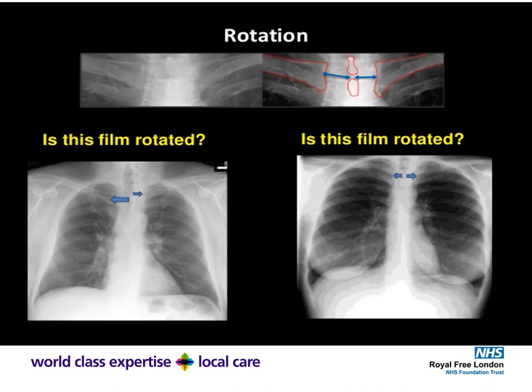Looking at rotation: on an unrotated film, the distances between the thoracic vertebrae and the clavicular heads are equal on both sides. On the bottom two films there is rotation, as shown by the difference in length of the arrows on each side.